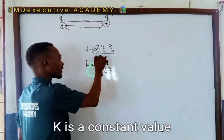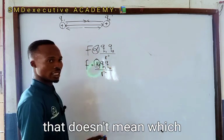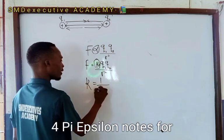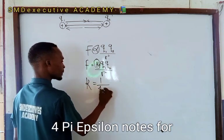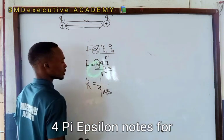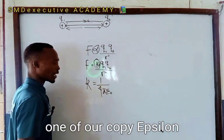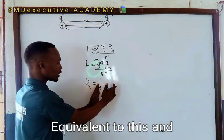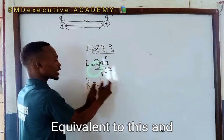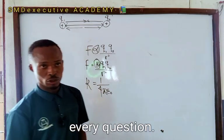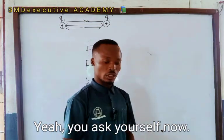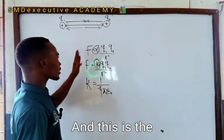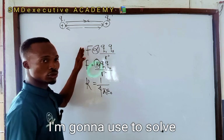This K is a constant value. K is equal to 1 over 4π epsilon naught. This is equivalent to that and it's always constant — it will be given in every question you're asked to solve. This is the formula we're going to use to solve today's question.